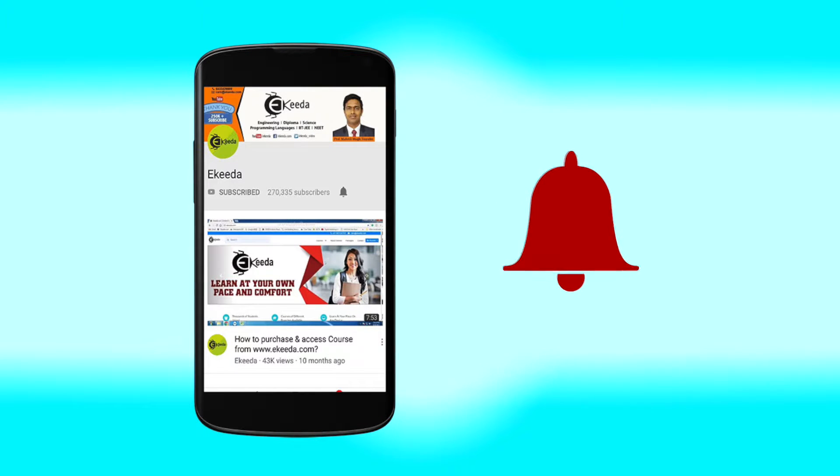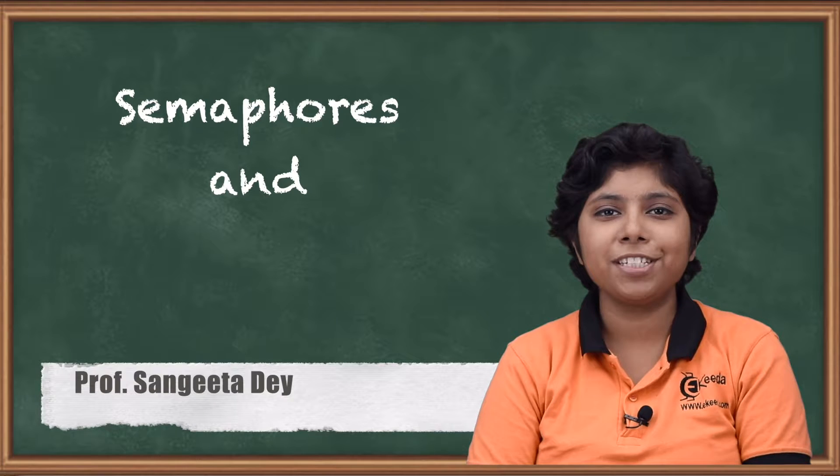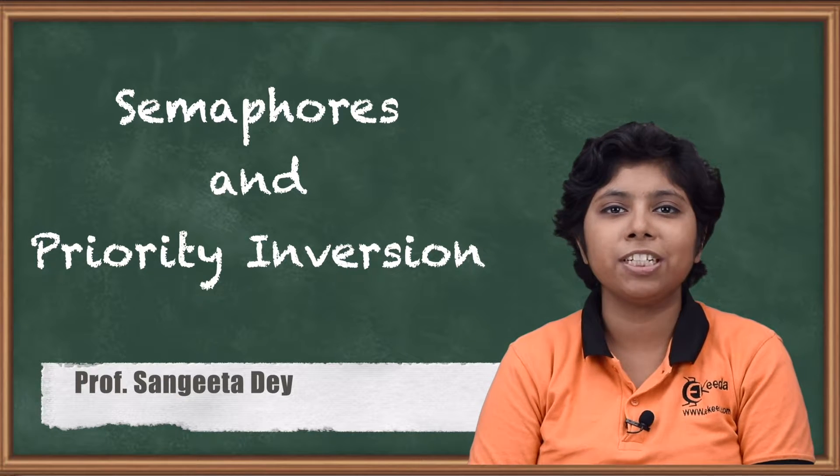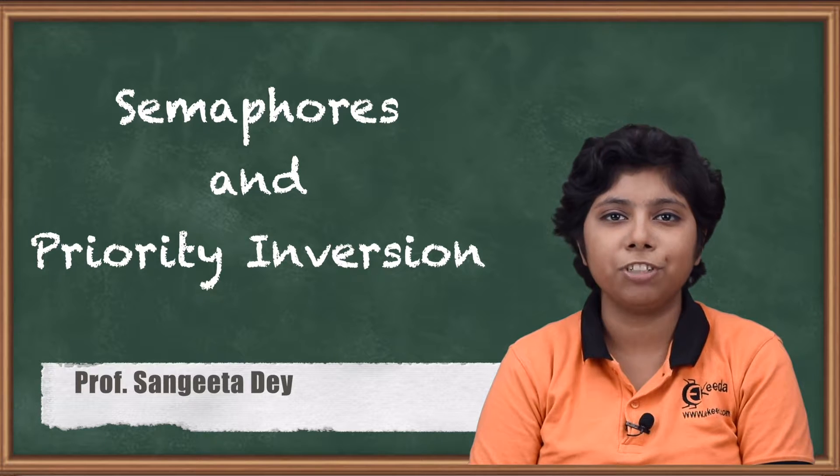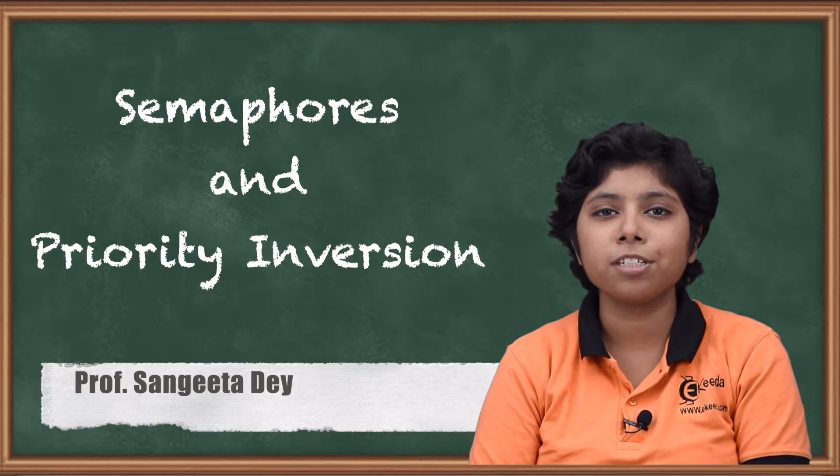Click the bell icon to get latest videos from iKeeda. Hello friends, today we will discuss two issues associated with the semaphore: number one is deadlock and starvation, when deadlock situations can arrive and what is starvation.